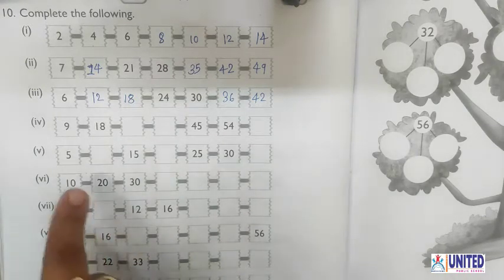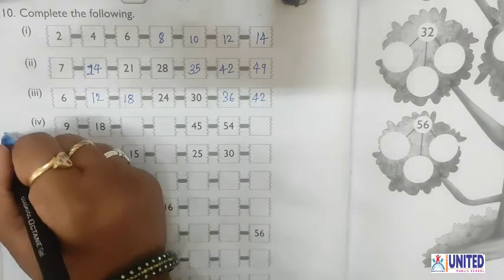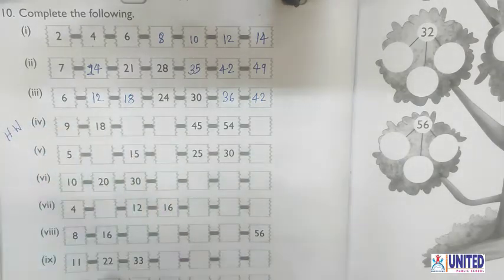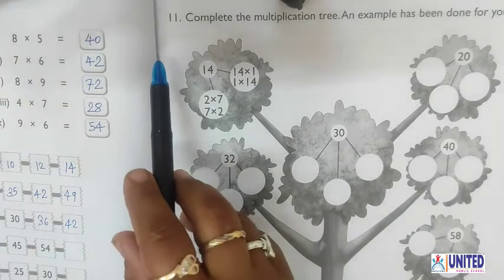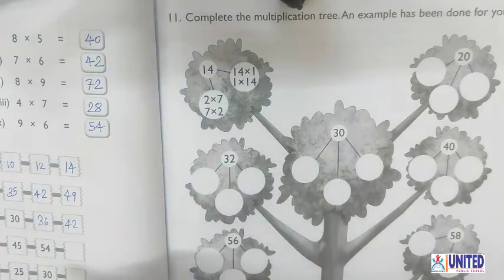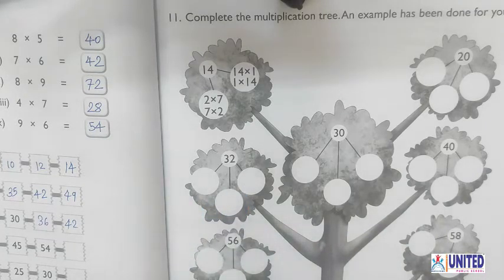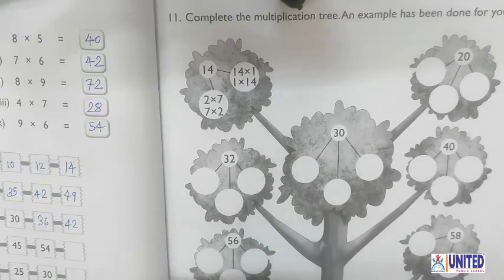So from number 4 to number 10, this is homework for you. You have to just write down the tables of that number. Now let's see question number 11: Complete the multiplication tree. In the multiplication tree, we have to write the multiplication facts.